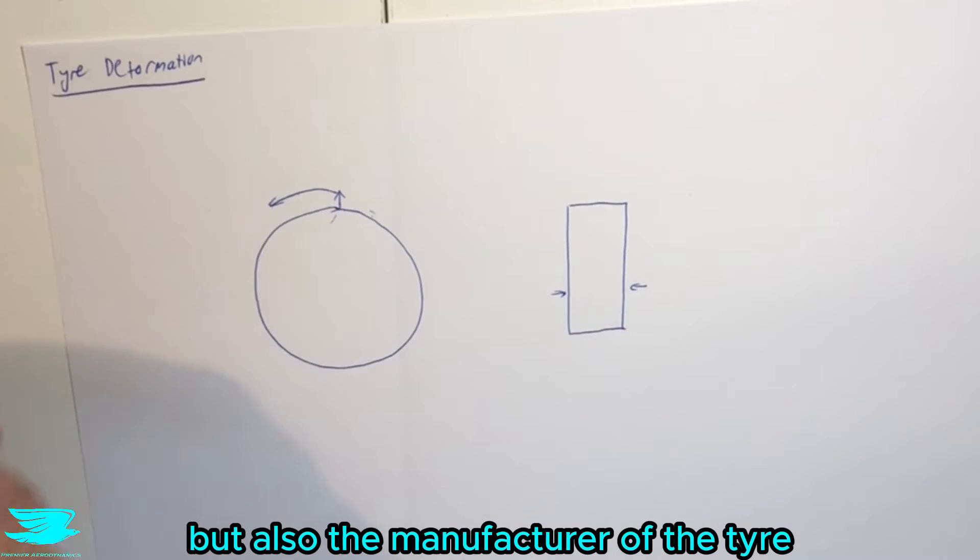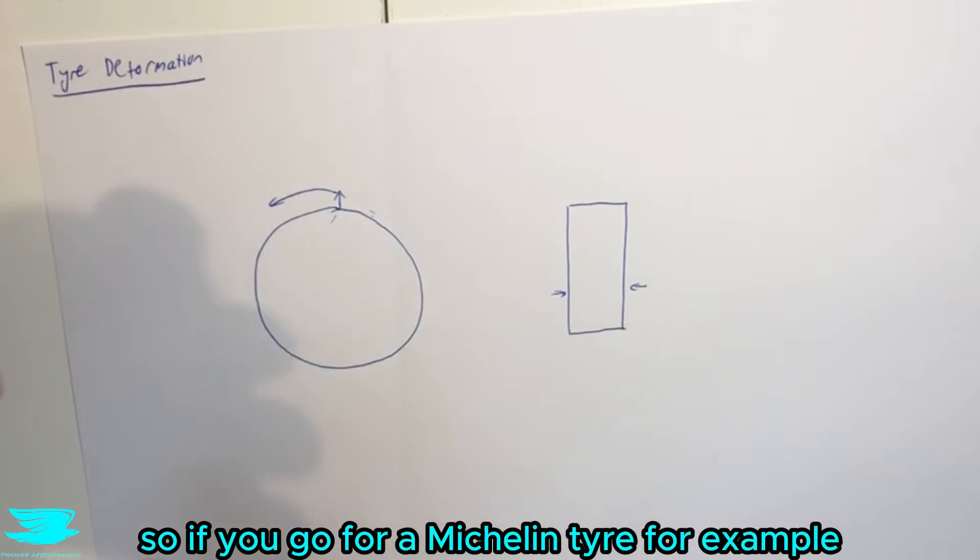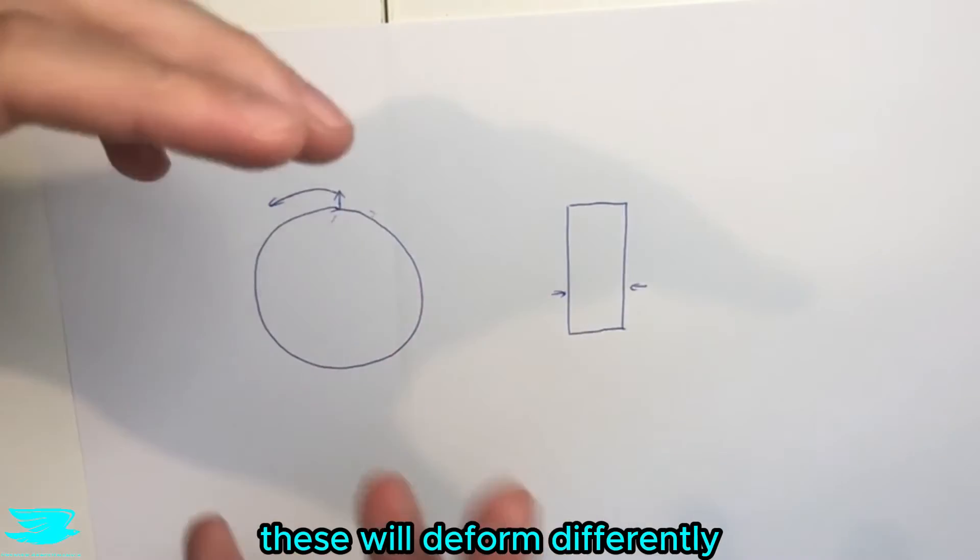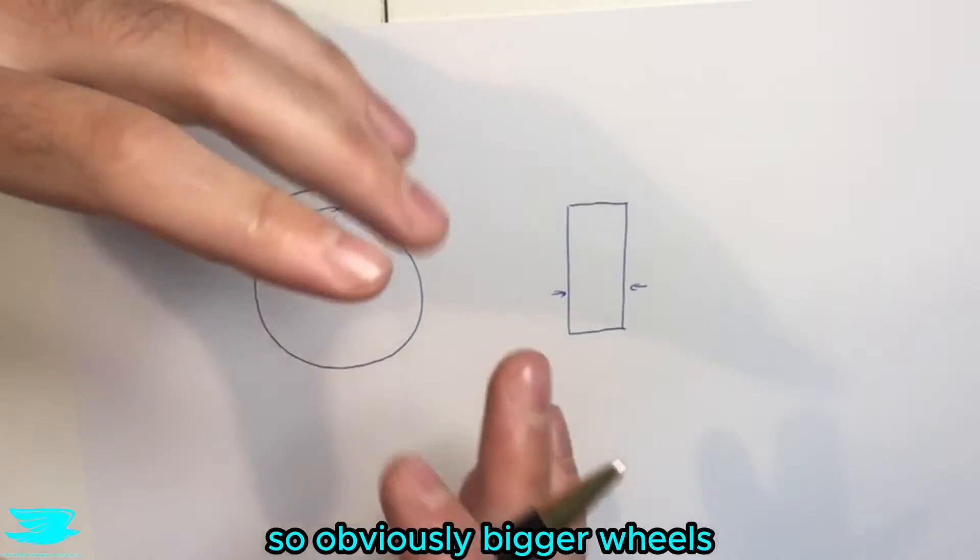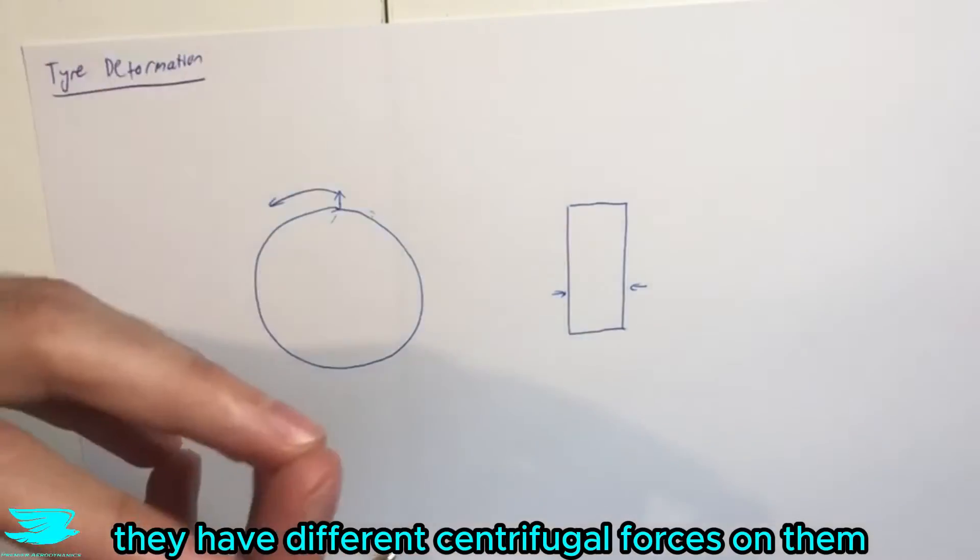but also the manufacturer of the tire, so if you go for a Michelin tire, for example, compared to a Continental tire, these will deform differently, not to mention if you have different sized tires, so obviously bigger wheels, they have different centrifugal forces on them.